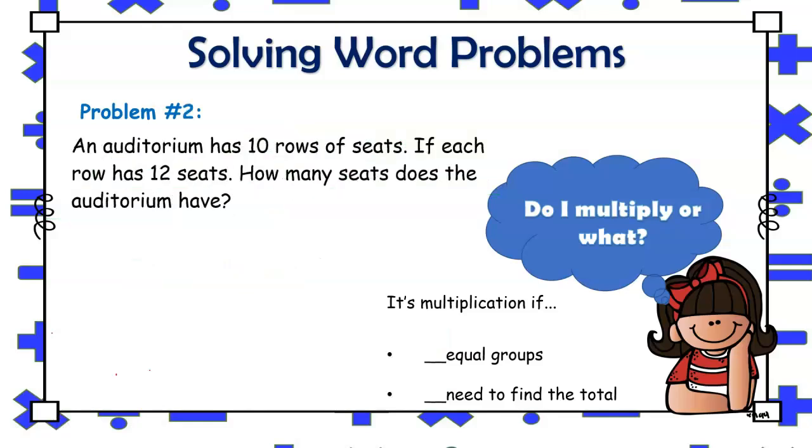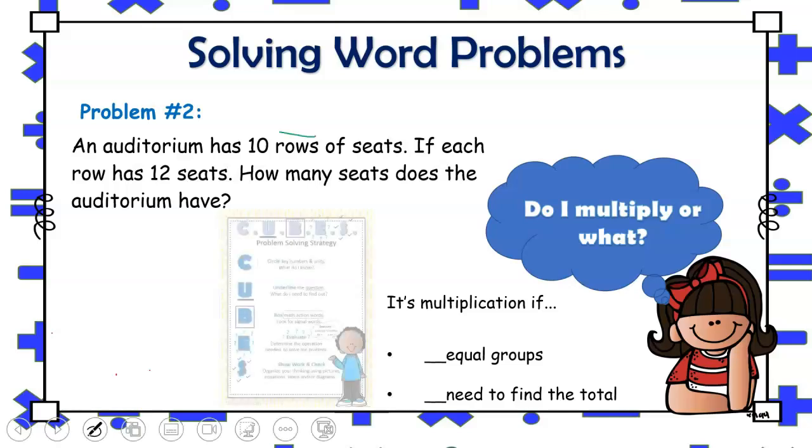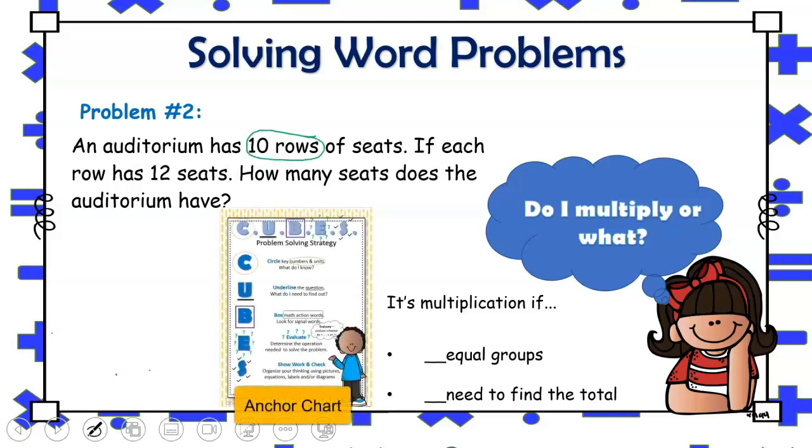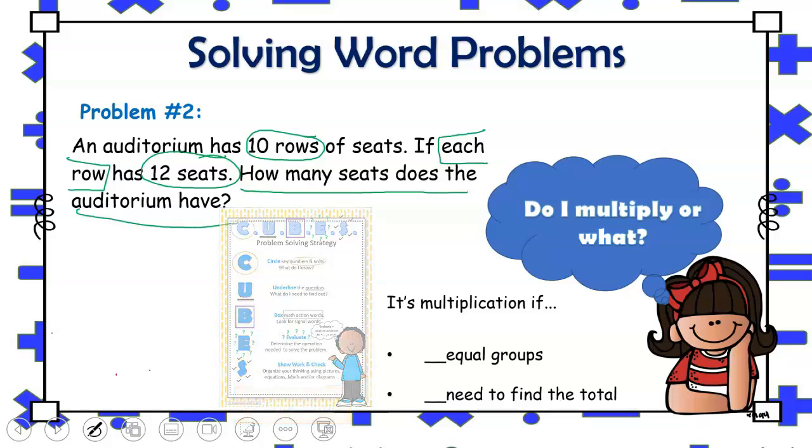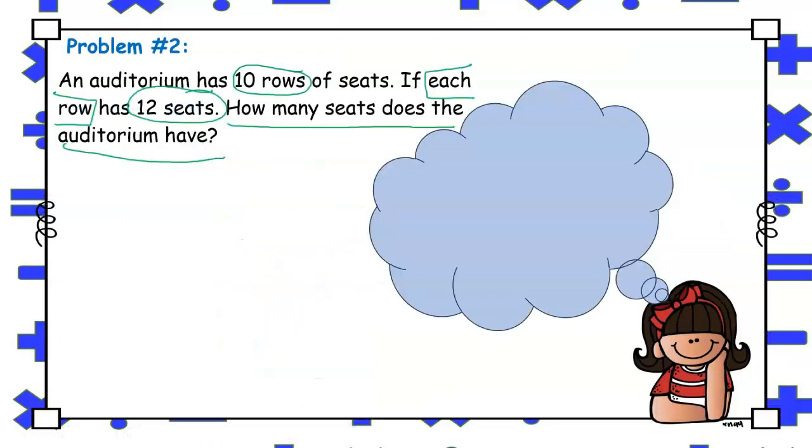An auditorium has 10 rows of seats. If each row has 12 seats, how many seats does the auditorium have? As always, we'll take time to identify important numbers as well as any signal words that may indicate an operation to use and we'll also identify the question. Remind students to keep the question in the forefront of their thinking. That is the goal of solving the word problem.